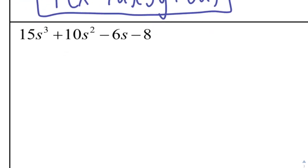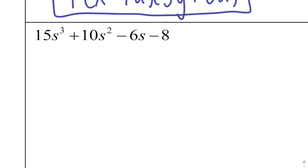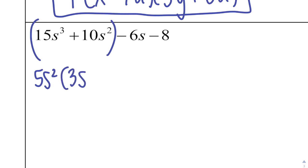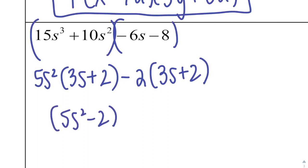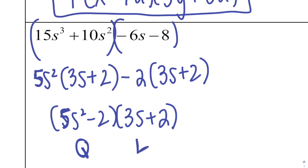Looking at this one — all s's: 15, 10, 6, 8 — unfortunately nothing in common across all terms, so just group it in half. From the first half I take out 5s² and I'm left with 3s plus 2. From the second half I take out negative 2 and I'm left with 3s plus 2. That gives (5s² minus 2)(3s + 2) — a quadratic factor and a linear factor; 2 plus 1 makes 3 total degree.